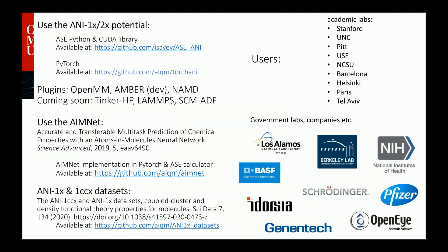Let me finish and leave you with this last slide. Most of our code is on GitHub. If you're interested in using ANI, we have a library coupled with the ASE Python environment. We have an implementation in PyTorch, and plugins for various molecular modeling packages like OpenMM and NAMD. You can see also ORCA, PLAMS, SimCare HPC, and others. Reference quantum mechanical data is available as well. It's been used across academia and in several companies and government institutions. Thank you so much for your attention. I'd be happy to answer any of your questions.